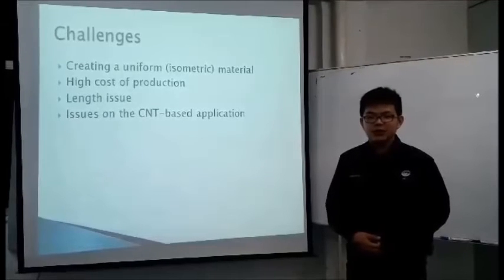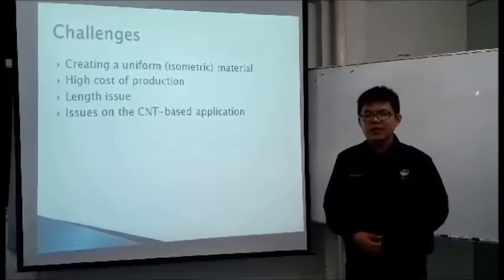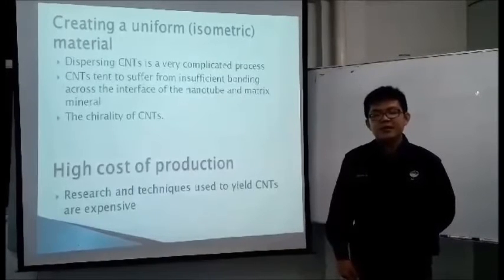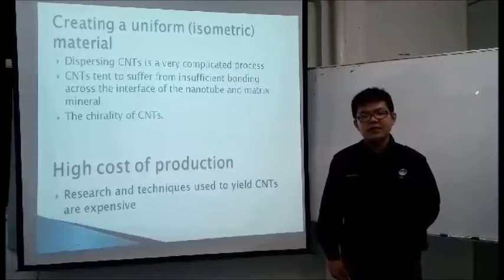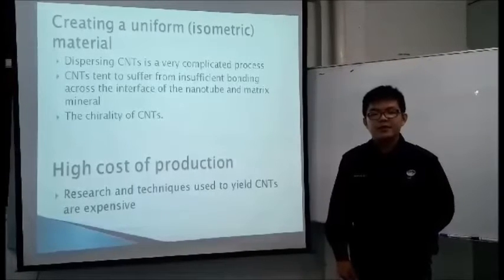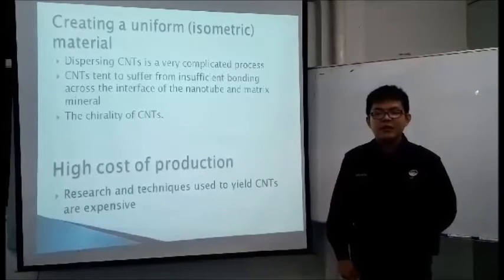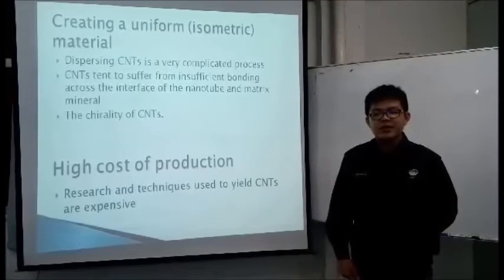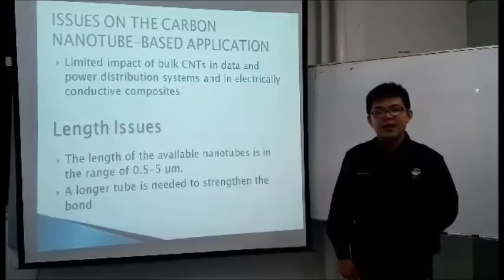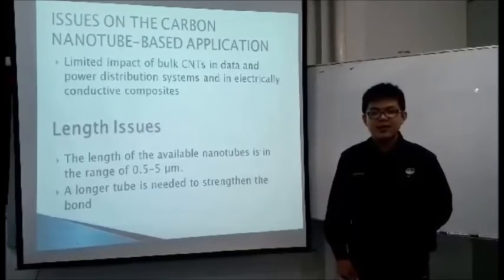Challenges faced by carbon nanotubes: creating a uniform or isotropic material, high cost of production, length issues, and issues in CNT-based applications. Creating uniform material is a problem because dispersing carbon nanotubes is a very complicated process as they are highly sensitive to process parameters. Carbon nanotubes also tend to suffer from insufficient bonding across the interface of the nanotubes and matrix materials. The chirality of carbon nanotubes is a challenge because it affects the conductivity of carbon nanotubes. Second, the high cost of production — research and techniques used to yield carbon nanotubes are expensive. Third, issues in CNT-based applications, especially in electrical materials, with limited impact on bulk carbon nanotubes in delta and power distribution systems and in electrically conductive composites.